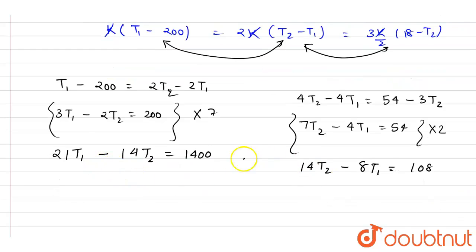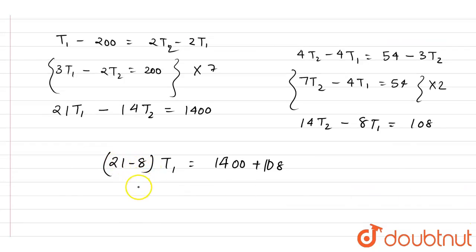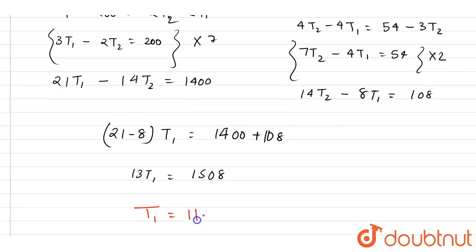So 21 minus 8, it is equals to, if you see this is 21 minus 8, it will be equals to 13T1. And here if you add the two, it is 1508. We will write down T1 equals to 116.